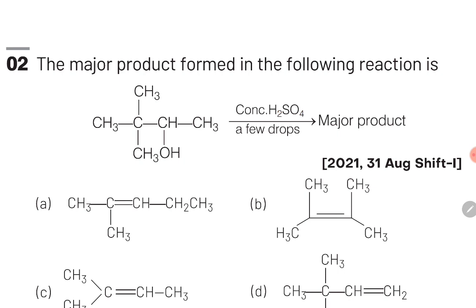Concentrated H₂SO₄ contains H⁺ ions, and these H⁺ ions will attach themselves to the OH group. This results in the formation of H₂O⁺ and hence water is released, resulting in the formation of a carbocation. Once a carbocation is formed, a 1,2-methyl shift will take place so that a more stable carbocation is formed, and then H⁺ ion will be lost resulting in the formation of a double bond.